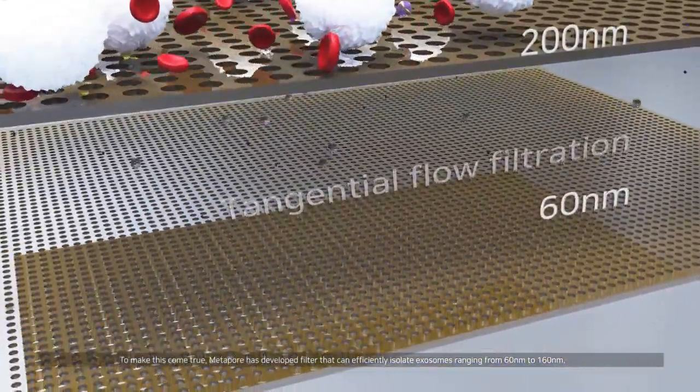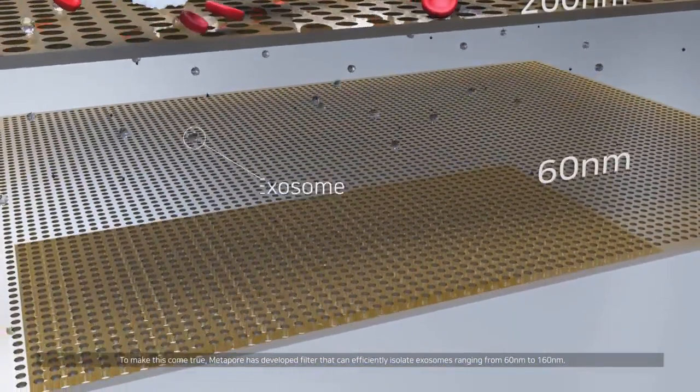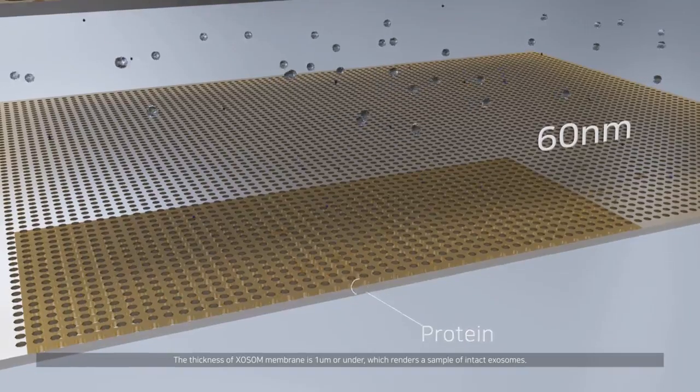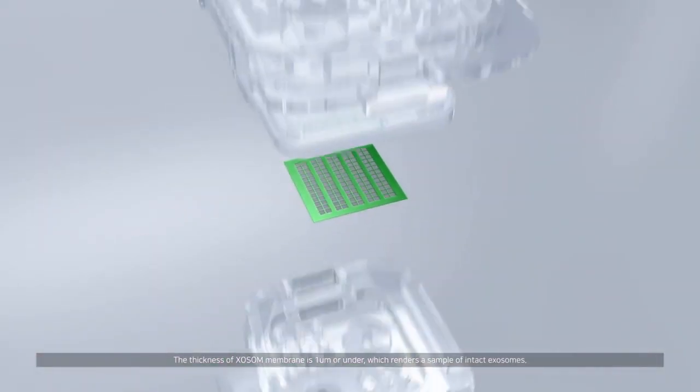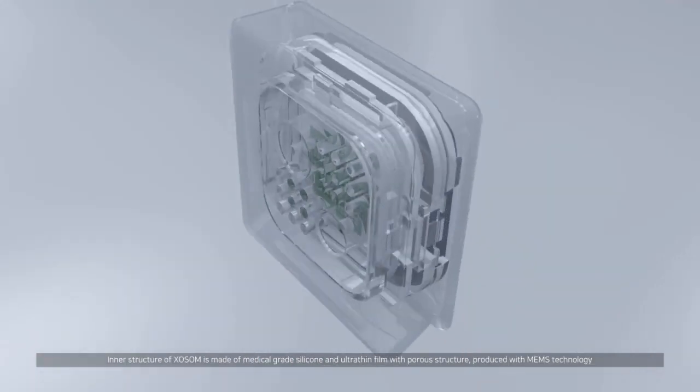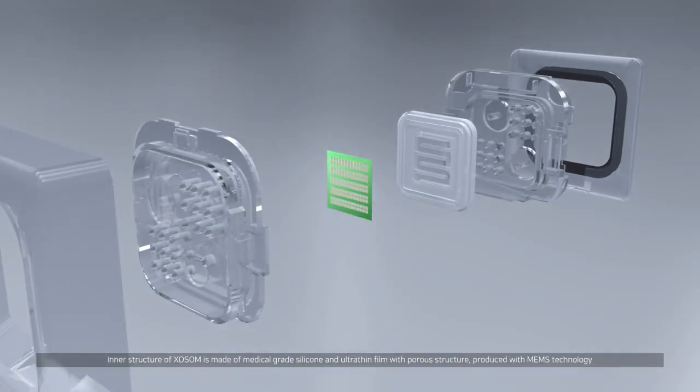To make this come true, Metapore has developed a filter that can efficiently isolate exosomes ranging from 60 nanometers to 160 nanometers. The thickness of exosome membrane is one micrometer or under, which renders a sample of intact exosomes.